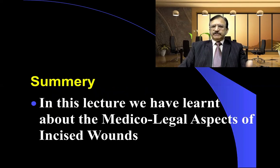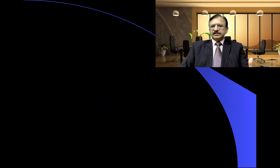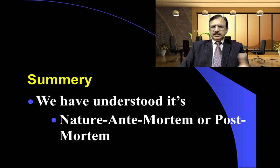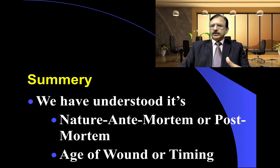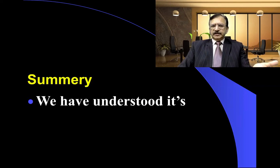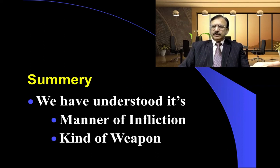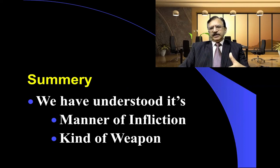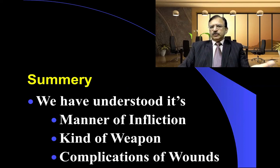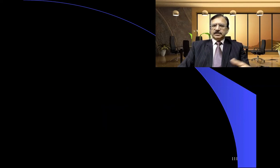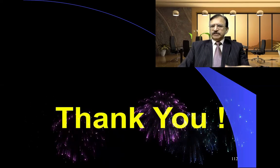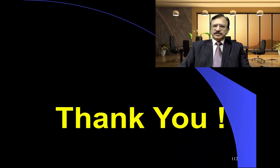In summary, this lecture covered the medical-legal aspects of incised wounds: the antemortem or postmortem nature of the injury, how to calculate the time and age of the wound, the manner of infliction (homicidal, suicidal, or accidental), identification of the kind of weapon from wound characteristics, and the early and delayed complications of incised wounds. Thank you very much — this concludes lecture number two, and the next lecture will cover other injury types.